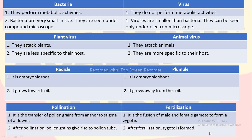Differences between pollination and fertilization: pollination is the transfer of pollen grains from anther to stigma of a flower; whereas fertilization is the fusion of male and female gametes to form a zygote. After pollination, pollen grains give rise to a pollen tube; whereas after fertilization, a zygote is formed.